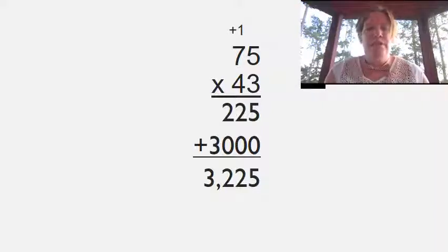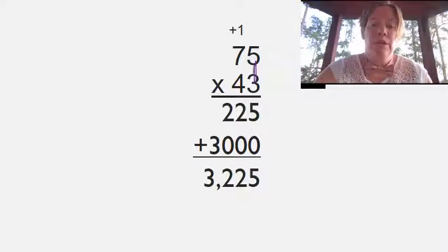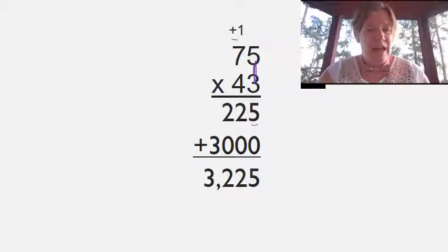I've already got this example done for you, so we're just going to go through the steps that I did to get there. To begin with, you always multiply the ones first. We know that three times five is 15, so you can see my five and that I carried a one. I added the plus sign to remind myself to add it at the end.